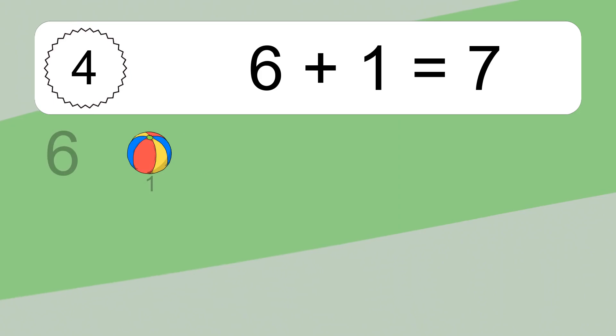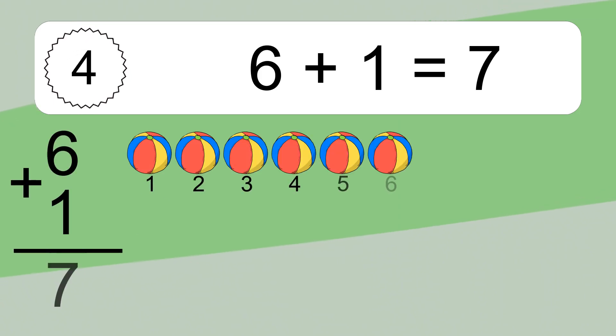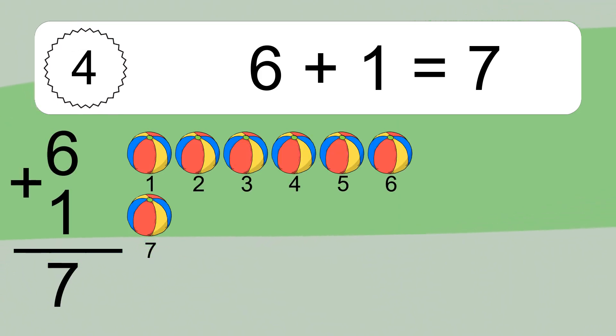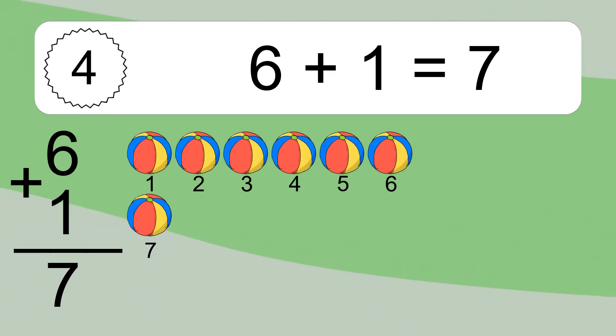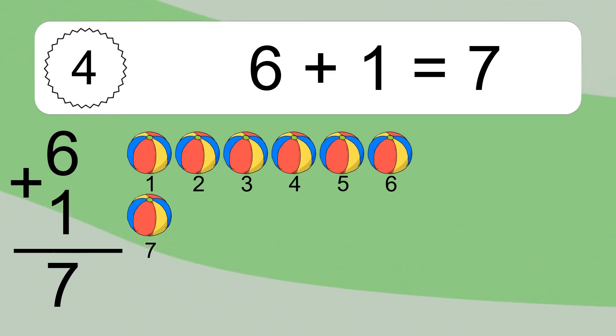6 plus 1 equals what? 6 plus 1 equals 7. Let's count it: 1, 2, 3, 4, 5, 6, 7.